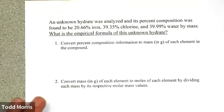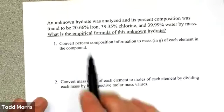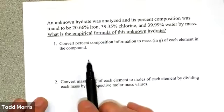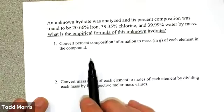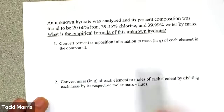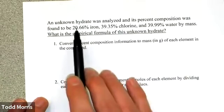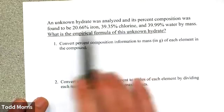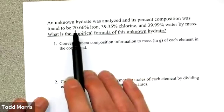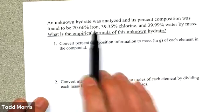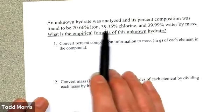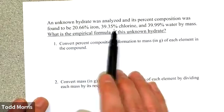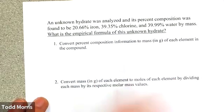Let's do one more example of converting percent composition information into an empirical formula. In this case, we're told we have an unknown hydrate. It was analyzed and found to contain 20.66% iron by mass, 39.35% chlorine by mass, and 39.99% water by mass.